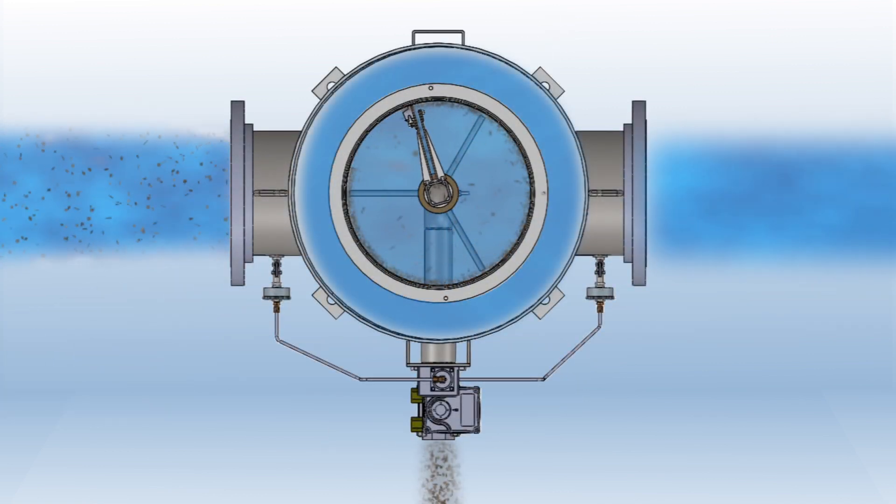This suction effect allows the cleaning port to pull the debris off of the inside of the screen while slowly rotating. The debris travels into the hollow backwash shaft assembly and passes down through the backwash control valve.